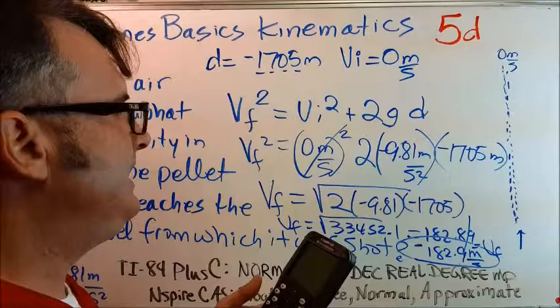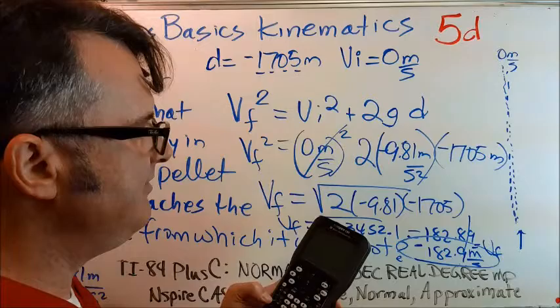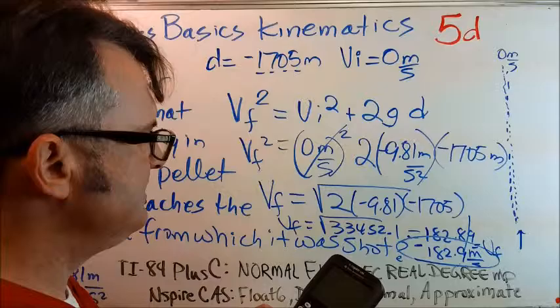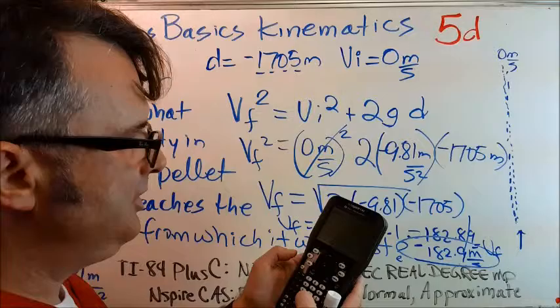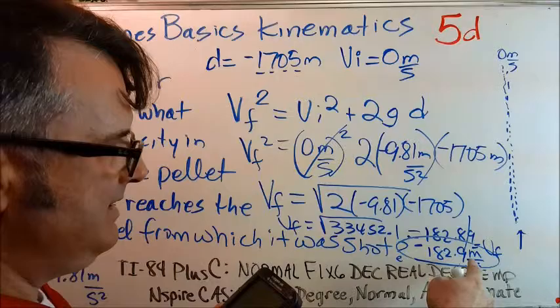Let's plug this into our TI Inspire CAS. That's 2 multiplied by negative 9.81 multiplied by negative 1705. Enter: 33,452.1. Let's take the square root of it. Control X squared will give us the radical. Control answer and hit enter will give us 182.89, which we cut off to 182.9.